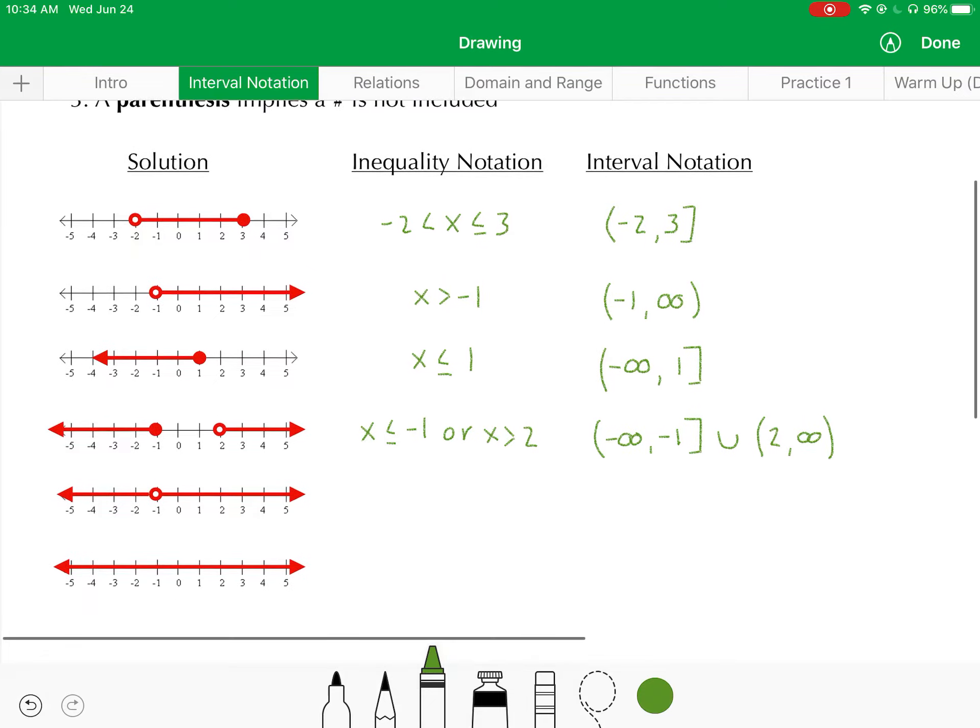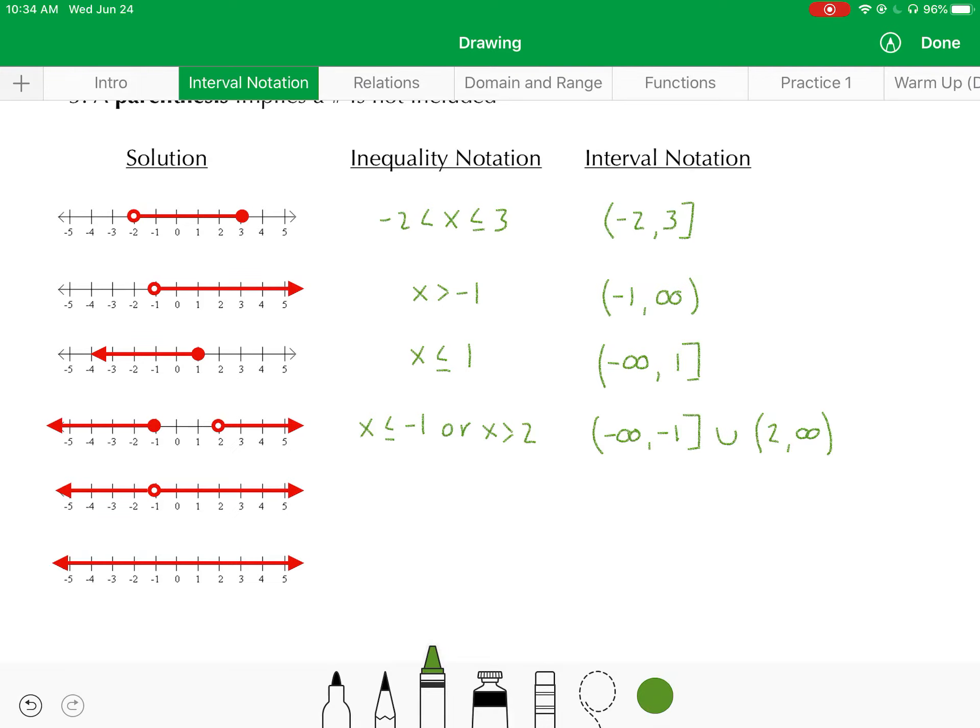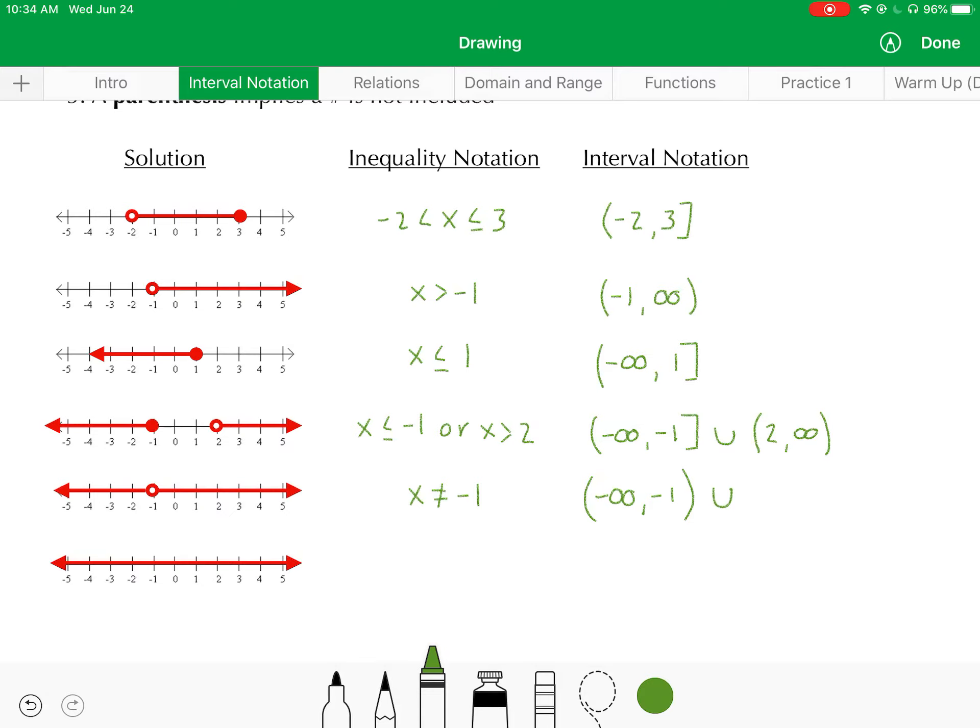Next solution set's a very unique one. Basically, with the way the graph is there, you're saying your solution is any number except for negative 1. So best way of writing that as an inequality would be x cannot equal negative 1. For interval notation, you're actually going to write this as two separate intervals, both which don't include the value of negative 1. So the first interval would be from negative infinity to negative 1. Notice I'm putting a parenthesis on negative 1. Then I'll do a union again, parenthesis, negative 1 to infinity. So notice both of those intervals, you're not including the value of negative 1.